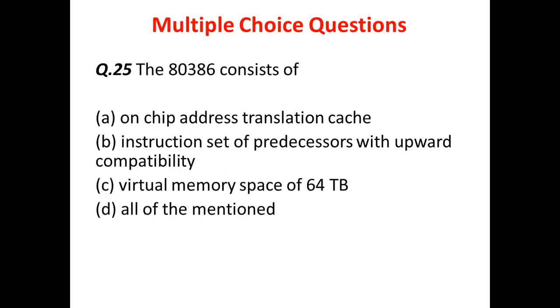Question 14: The 80386 DX consists of which of the following? Options include on-chip address translation caching, instruction set with upward compatibility, and virtual memory space of 64 TB. The answer is all of the above. Thank you friends for watching the video.